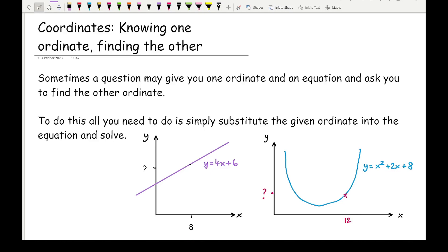For example, looking at our straight line graph here, we've been given the x ordinate of 8. So we know that x equals 8 and we want to find out what y is. All we need to do is substitute x equals 8 into this equation here.